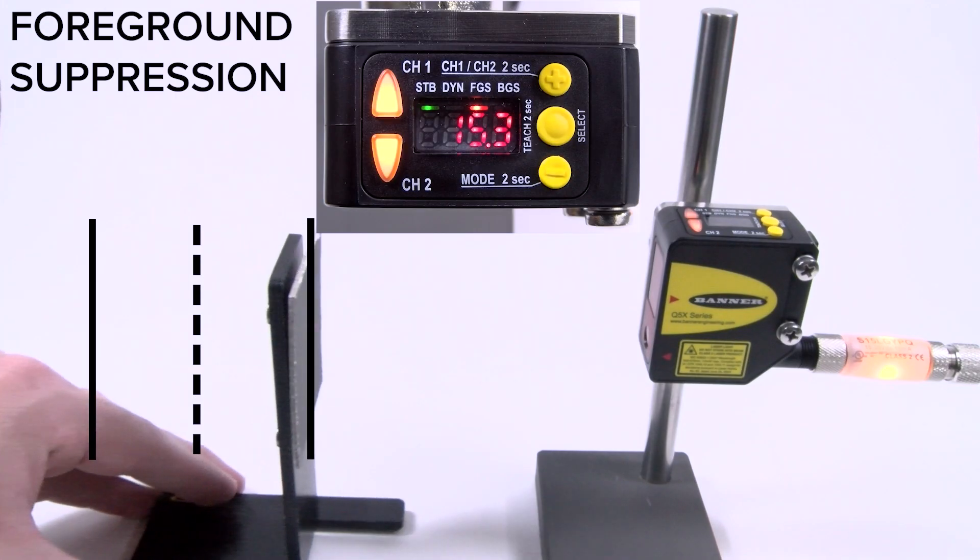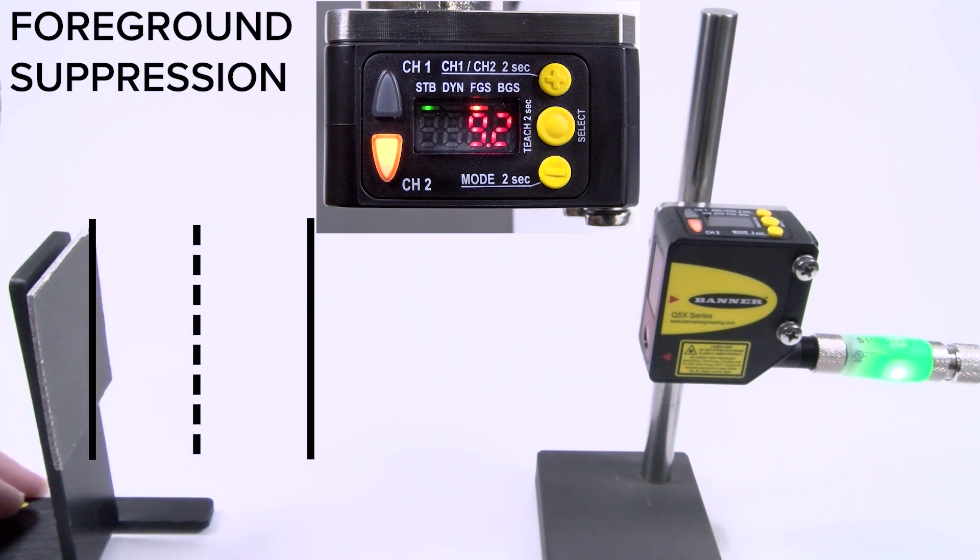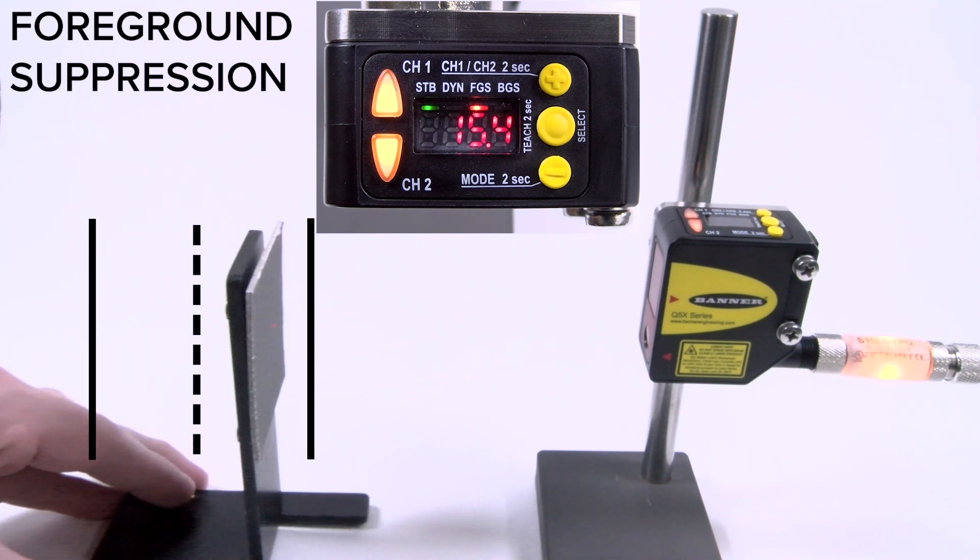Foreground suppression is best used when you want to keep an object in a constrained area. The sensor sets a window around the taught point, then anything in front of or behind the window will be ignored.